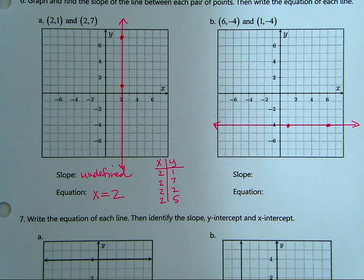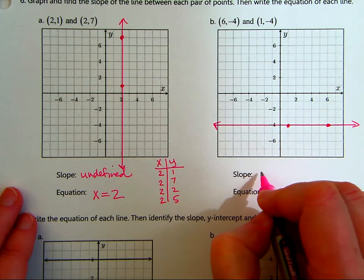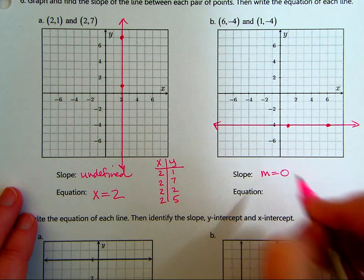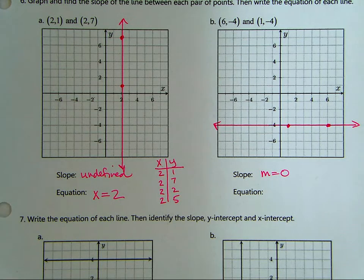So the same y value, this is the one that has a slope of 0. Because you don't rise, you just run. This one, you rise and you never run. It's like me. You rise and you don't go running.